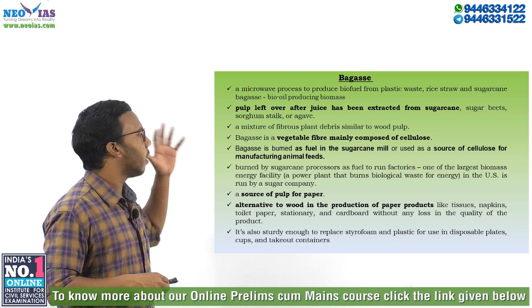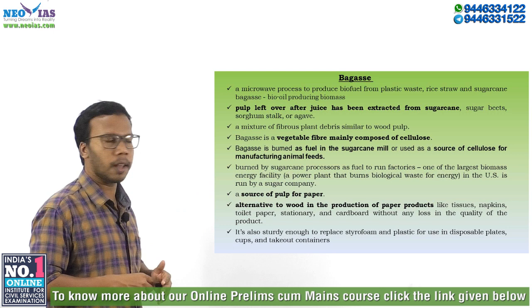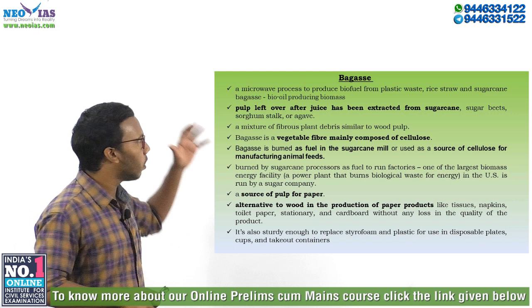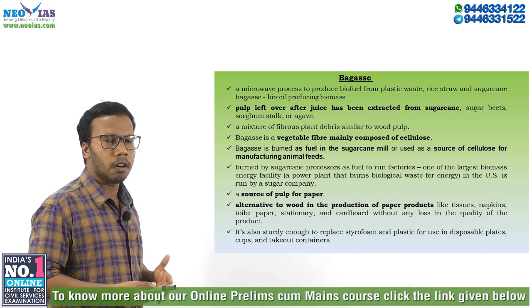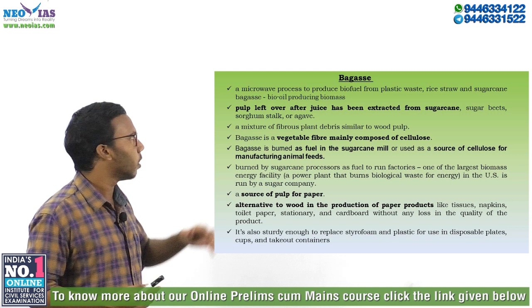Bagasse is also sturdy enough to replace styrofoam and plastic for use in disposable plates, cups, and takeout containers. So bagasse can even replace styrofoam and plastics. All of this shows that bagasse can be an environment-friendly alternative to most products we currently use. It is an environment-friendly alternative to everyday items made from plastics as well as from wood pulp.